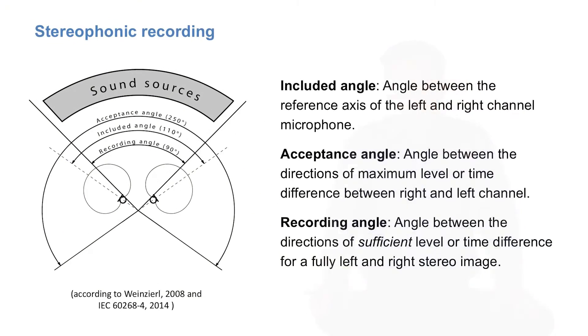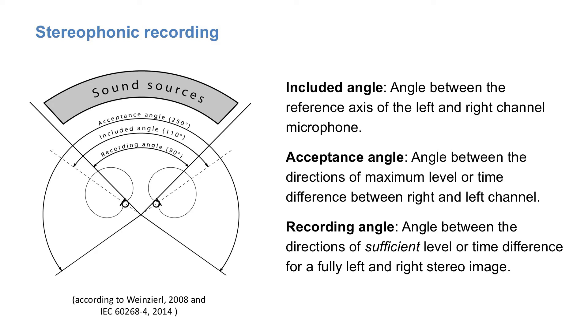No matter which technique you choose, the properties of the recording system can be characterized by three values. The first is the included angle between the reference axis of the left and right channel microphone. This makes sense, of course, only for directional microphones, because omnidirectional microphones are usually aligned in parallel.